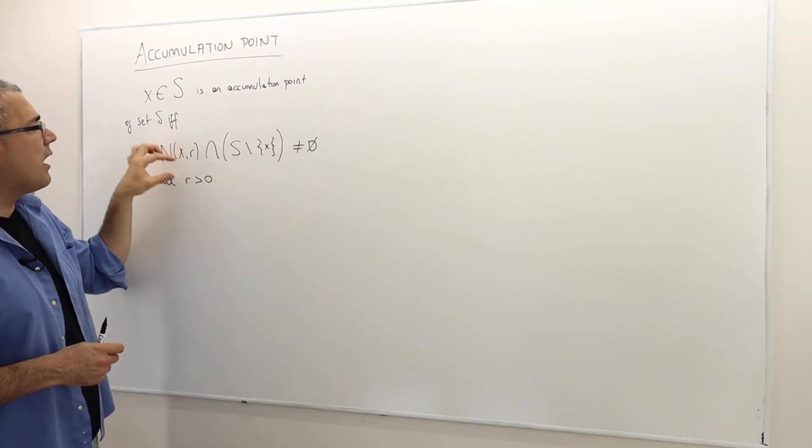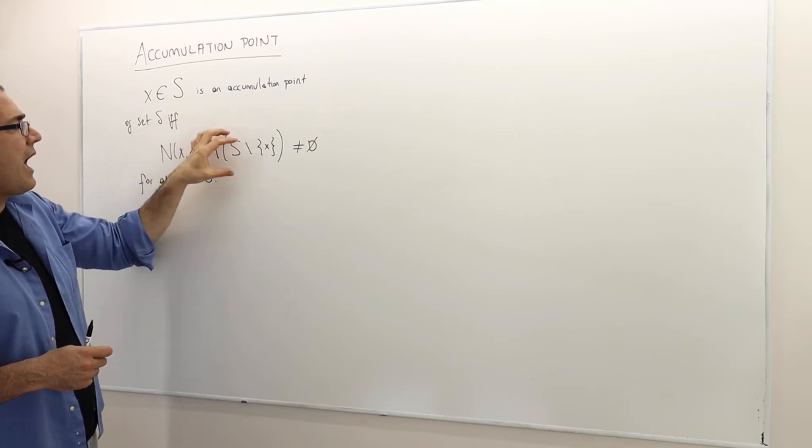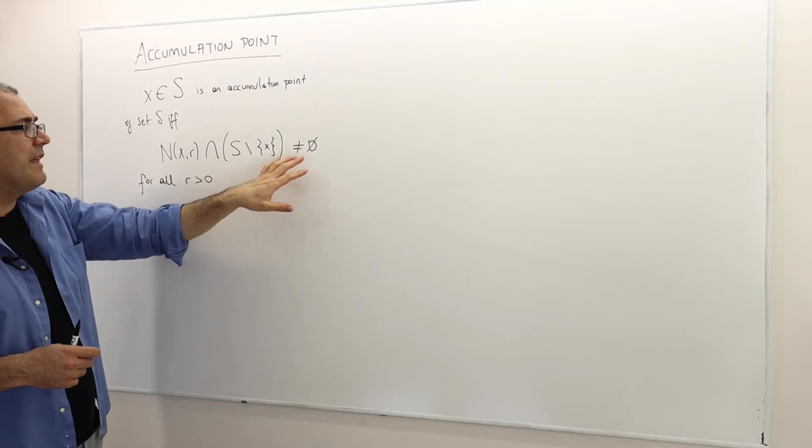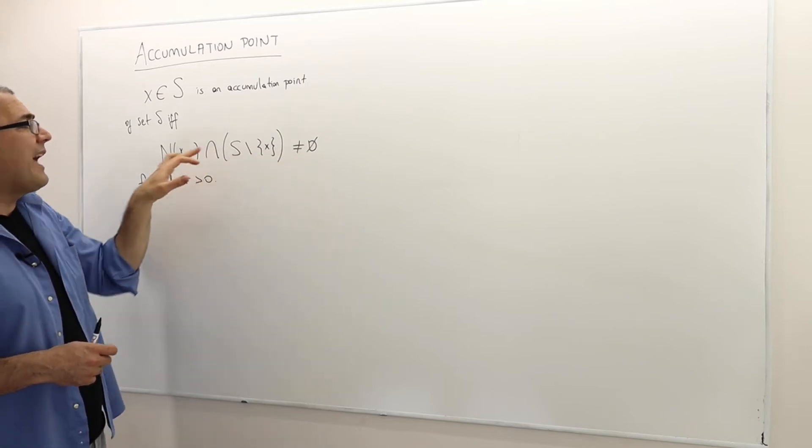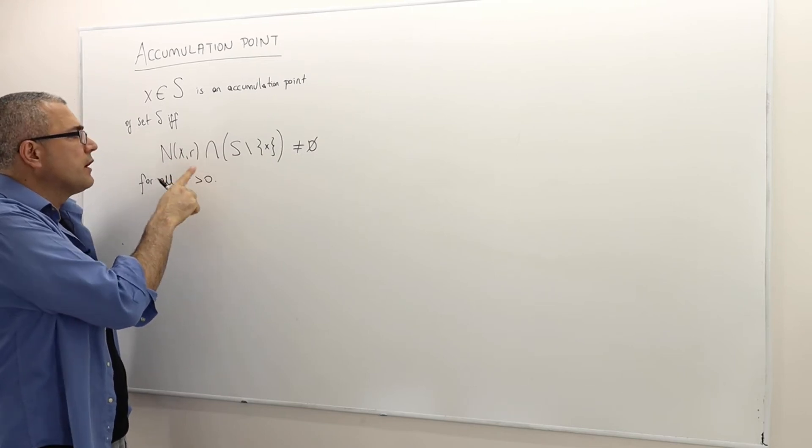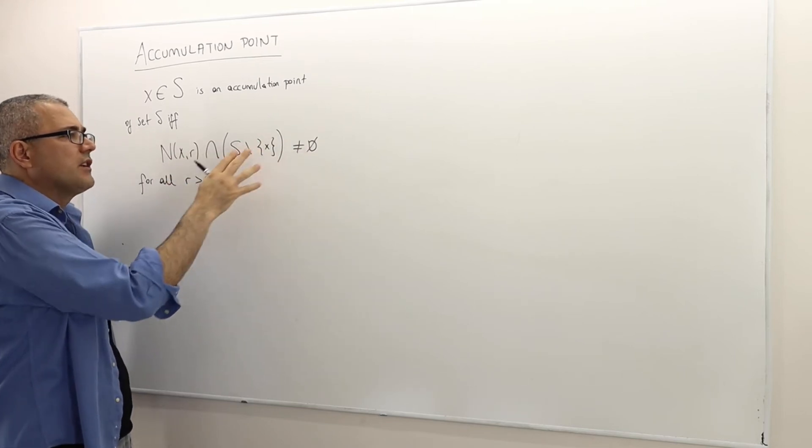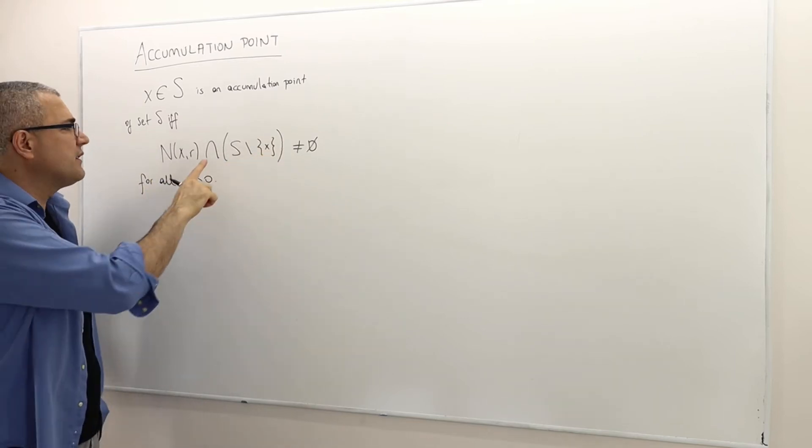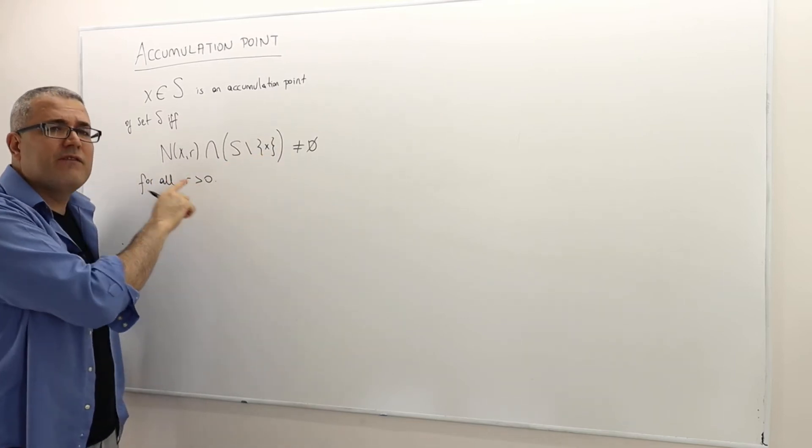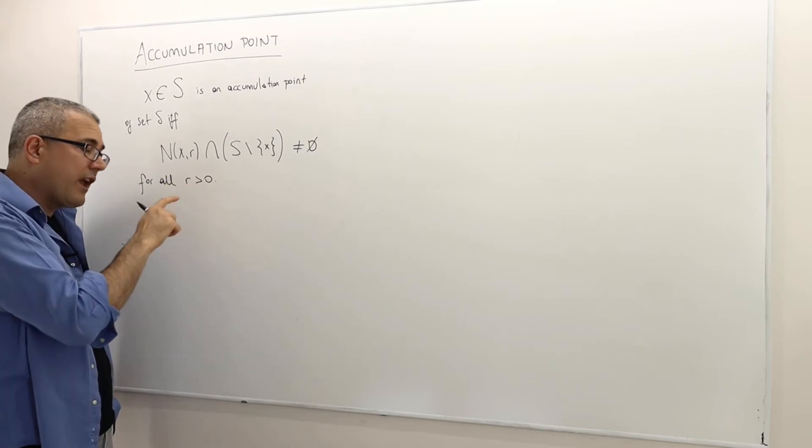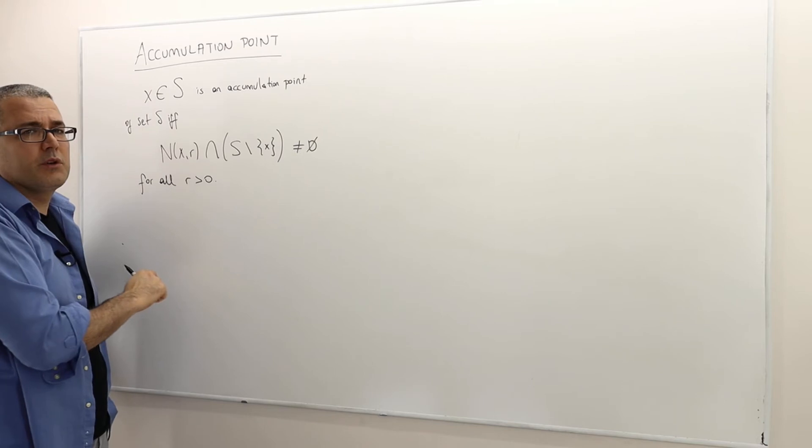So the neighborhood, R neighborhood around X and the set S intersection is going to be non-empty. Well, X is always an element of this neighborhood. So therefore, I want this intersection having elements other than X. But the thing is, this has to be true for every R, for every positive real number R.